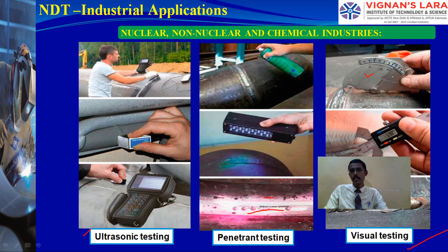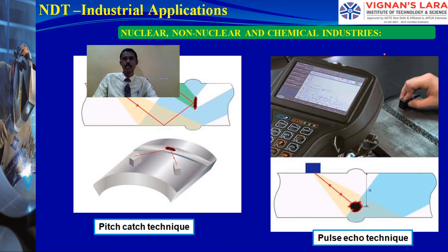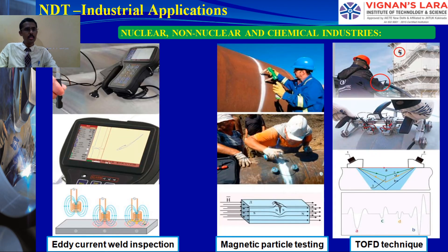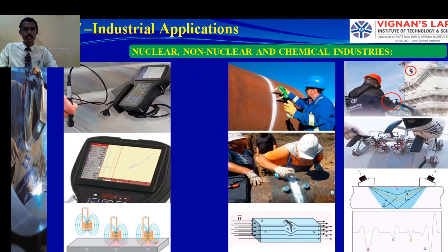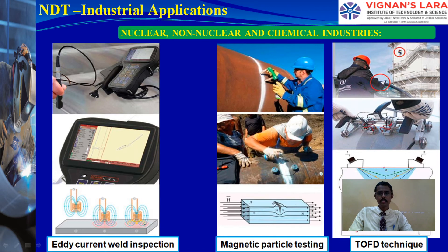Visual testing uses a weld gauge for reinforcement height measurement on flat pipe welds, identifying undercuts or unfilled grooves. Pitch-catch and pulse-echo ultrasonic techniques are demonstrated by moving a probe over the object. Eddy current inspection techniques are also used to identify errors.